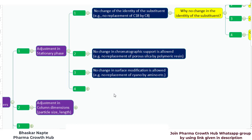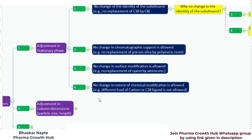No change in surface modification is allowed either. For example, replacement of cyano by amino, because this change can completely bring a new perspective to the characteristics of the chromatographic system. Point number 4: no change in the extent of chemical modification is allowed. How much percentage of carbon is present in a C18 ligand? You need to keep the extent of chemical modification similar to that of the stationary phase proposed in the monograph, because this kind of chemical modification also impacts the relevant performance characteristics of the chromatography.